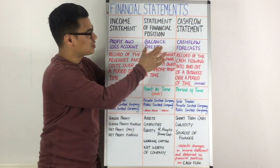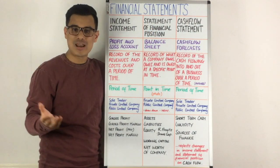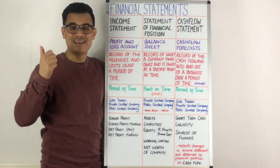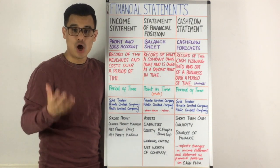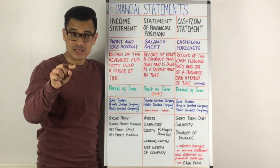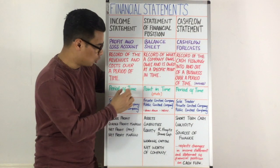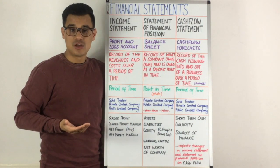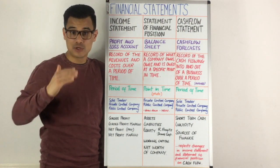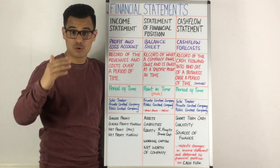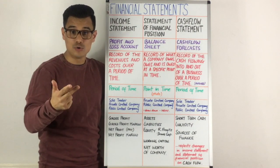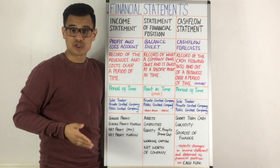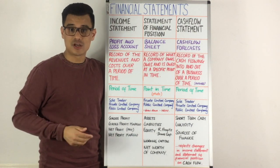The statement of financial position is sometimes referred to as the balance sheet, and the balance sheet is a record of what the company owns, owes, and is owed at a point in time — not a period of time, a point in time. That's why sometimes you can refer to it as a photo, because you're taking a photo of what you own, owe, and are owed at that point in time. But then the next day some of that might change, so that photo is out of date.